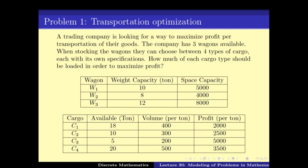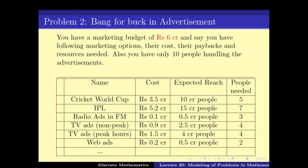The first problem we looked at in the last video was finding the best way of loading three wagons using four different kinds of cargoes, with restrictions on the weight and space each wagon can carry. In this particular video, we will be looking at the second problem, namely bang for buck in advertising.